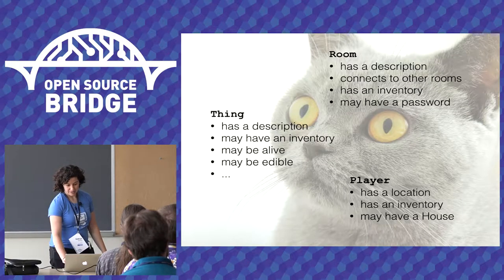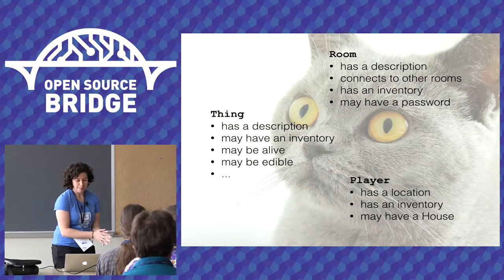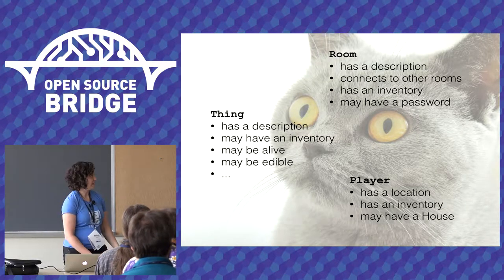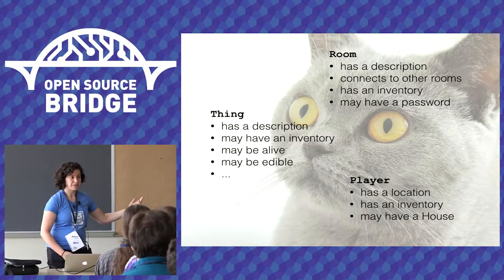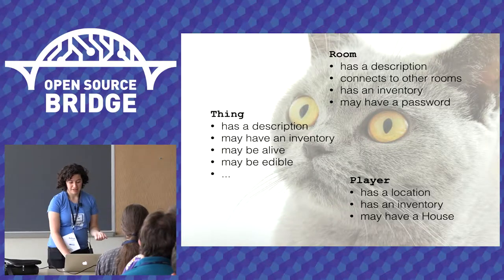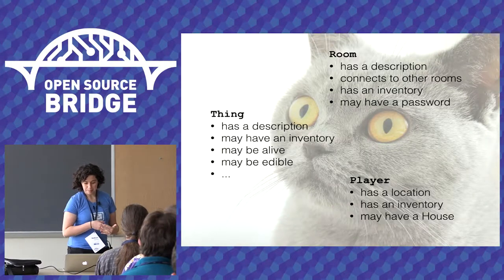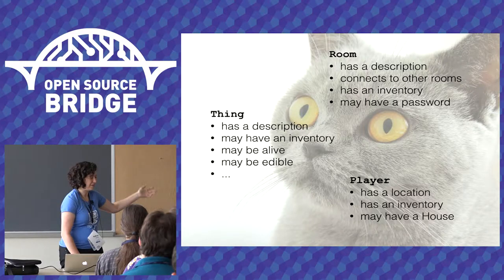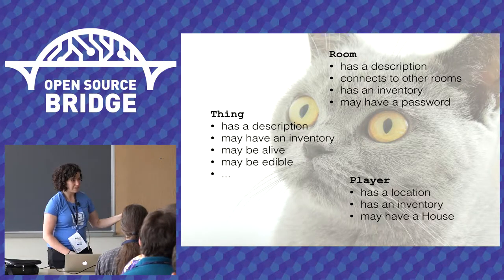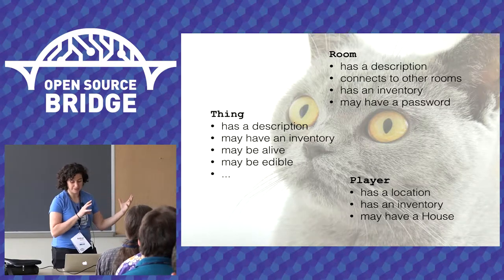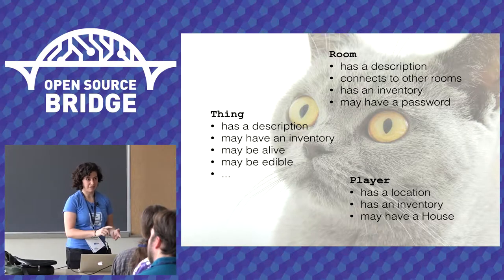For my text adventure game, I chose to implement three types of stateful things: rooms, things, and players. Rooms are things like Filch's office — they have descriptions like 'you're in a small spotless room,' they can connect to other rooms, and they have inventories. Things like the cat or the filing cabinet have a description, they can contain things, they might be alive like the cat, they might be edible — there are a lot of properties that things can have. Players have locations and inventories, and in a Harry Potter game they're going to have a house. The entire state of Hogwarts is represented by the collected state of all the rooms, things, and players in the game.